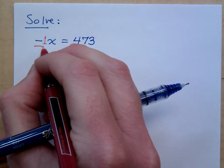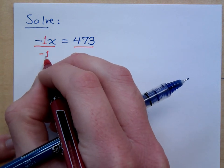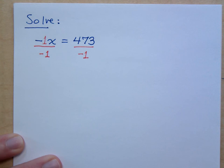I'm going to divide by that coefficient, so I divide both sides by negative 1. Like that. Do you all agree with that?